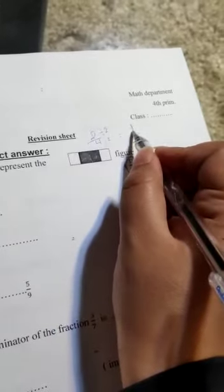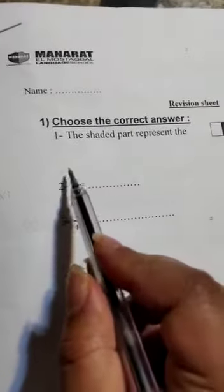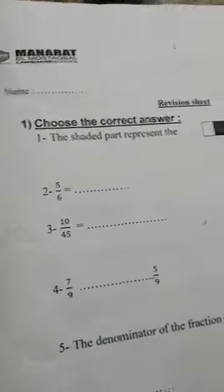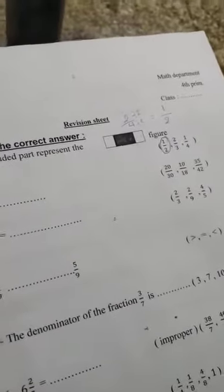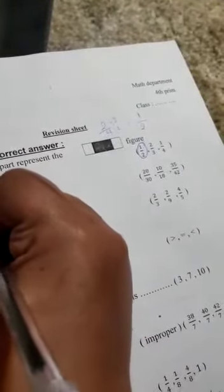Number two: five over six, four, five, six. Equal fraction, equal fraction. It will be by seven up, by seven down. Five by seven is thirty-five, six by seven equals forty-two.